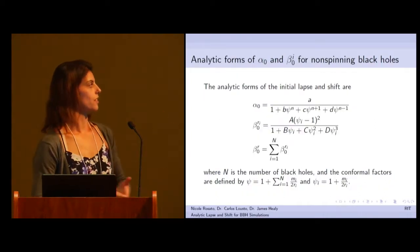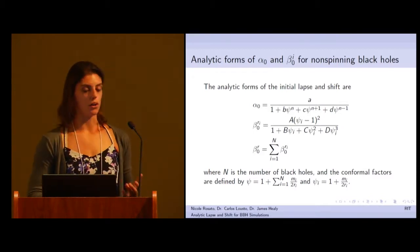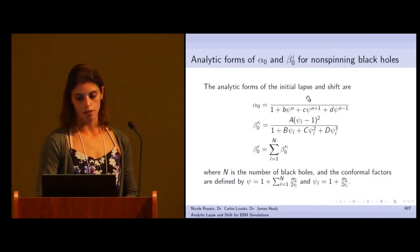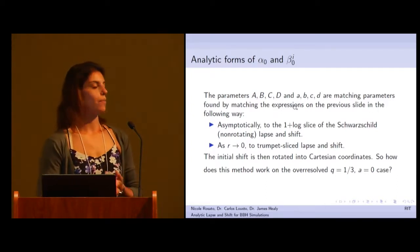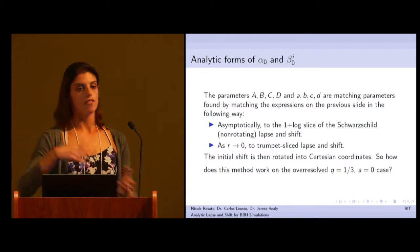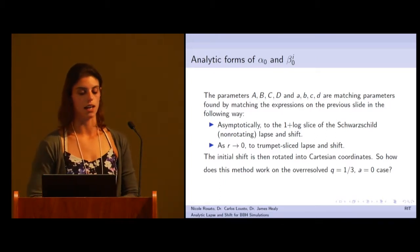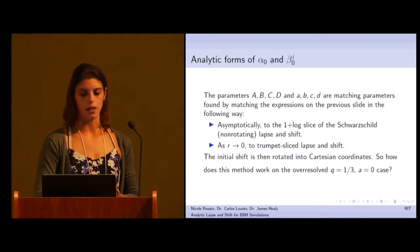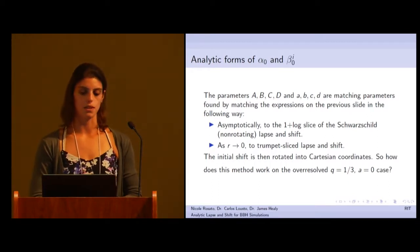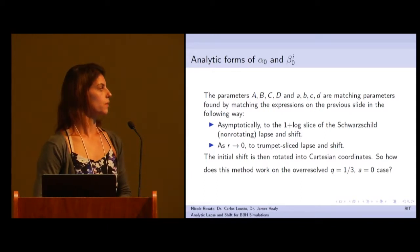I'll just flash the equations that we're using here. This is the initial values for the lapse and the shift. They're just polynomial approximants made up of matching parameters A, B, C, and D, and then a conformal factor. We find them by matching to two different slices of the spacetime. Far away from the black holes, we match to the one plus log slice of Schwarzschild, a non-rotating black hole metric. And then as R goes to zero, we match to a trumpet slice lapse and shift, which is where the name comes from. Then we rotate this into Cartesian coordinates so we can use it with our code.